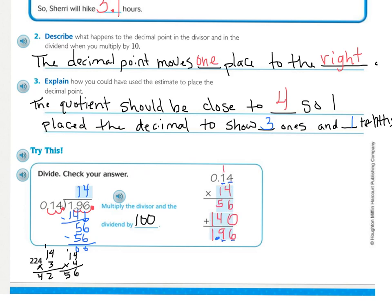And multiplying, I got 1.96. And in my problem, I had two decimal places, two decimal places in my answer. So, my dividend and my product are the same, so I am correct.